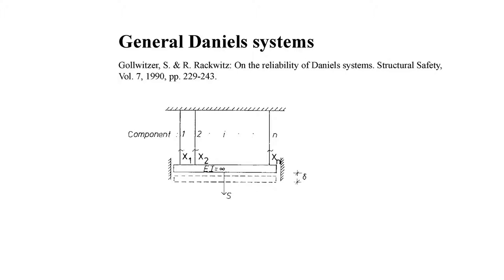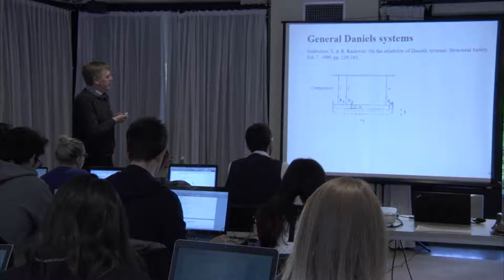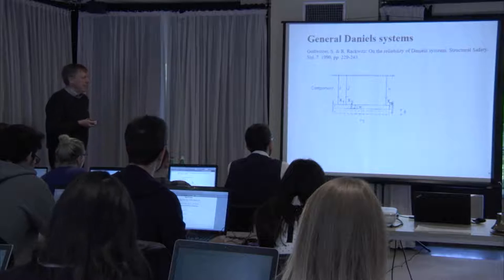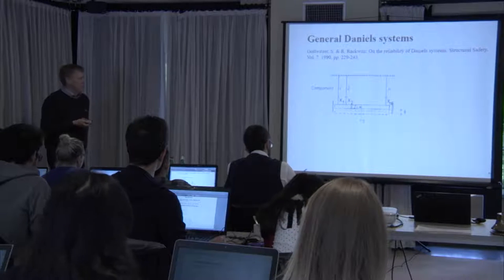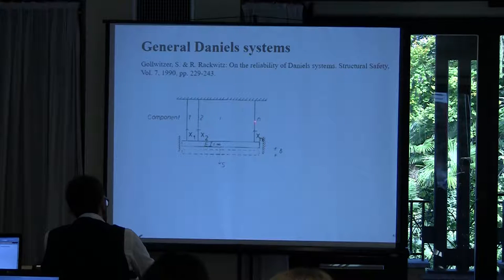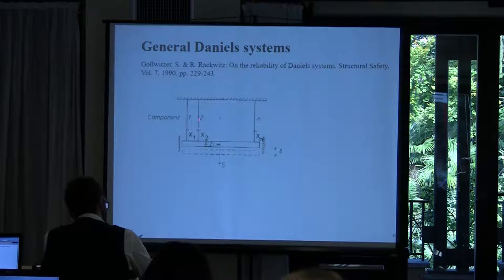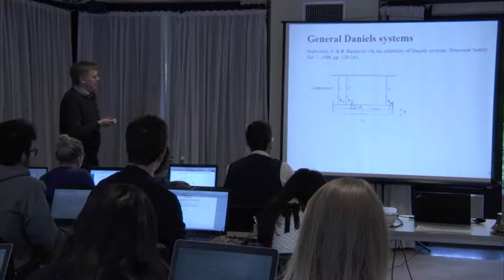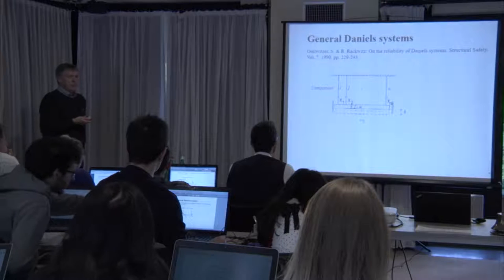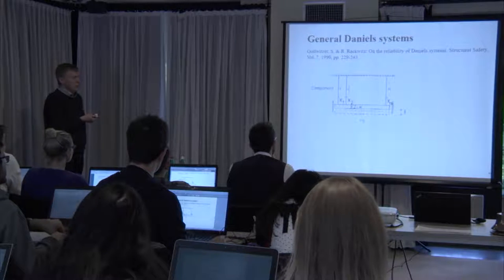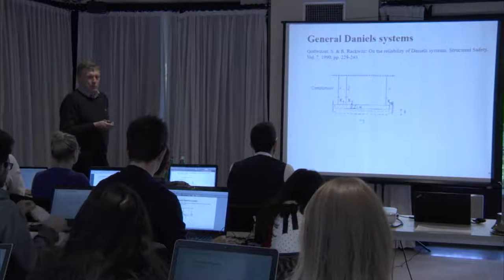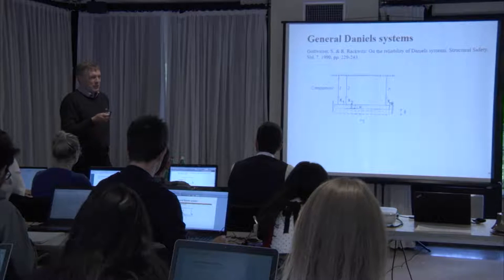A paper by Gollwitzer and Rackwitz provides a more general treatment of system behavior with components that can be brittle, ductile, or intermediate. The system has a load and components sharing the same load effect. The paper describes limit state equations for each mechanical behavior type in more detail. Two key figures from that paper illustrate the behavior of series and parallel systems under varying component count and correlation.